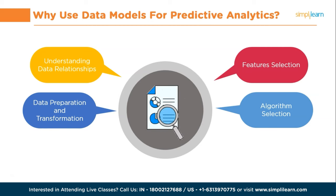Let us now discuss the various types of predictive analytical models. Predictive analytics models are used to analyze historical data and make predictions about future events or outcomes. There are several types: first, classification models are used to predict categorical outcomes or group data into predefined classes — examples include logistic regression, decision trees, random forest, and support vector machines. Second, regression models are used to predict a continuous outcome variable based on one or more independent variables — examples include linear regression, multiple regression, and polynomial regression. Third, clustering models are used to group similar data points together based on their characteristics or patterns — examples include k-means clustering and hierarchical clustering.